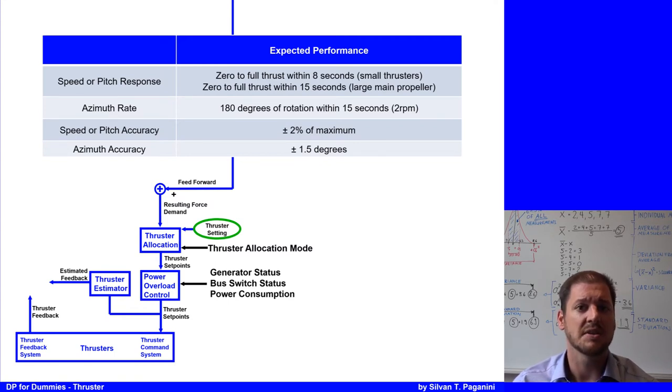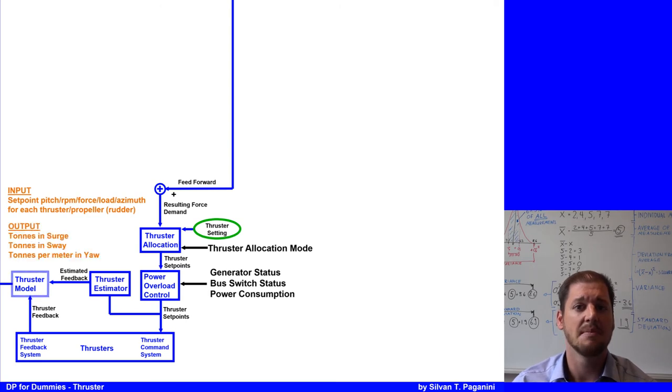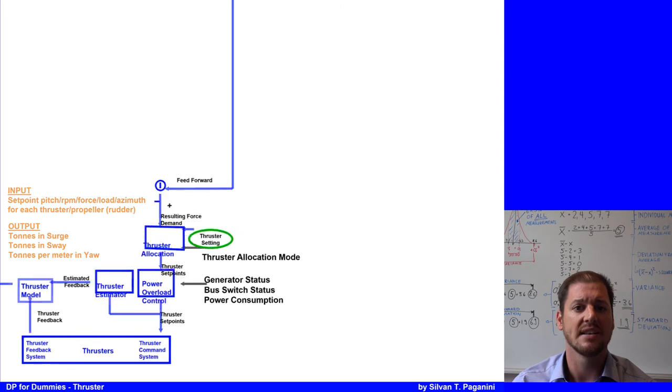The feedback from the thruster and the estimated feedback is sent to the thruster model. The thruster model has two tasks. First, the model monitors the difference between the thruster set points and feedback. Secondly, it converts the thruster feedback like RPM, pitch to thruster force in surge, sway, and yaw and sent to the vessel model.